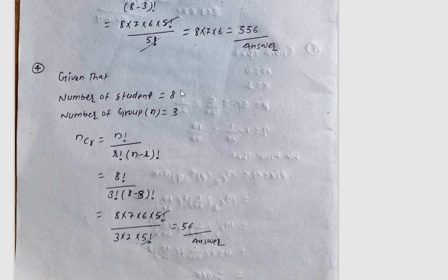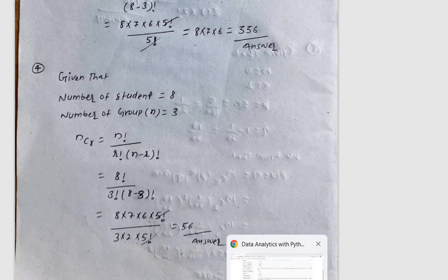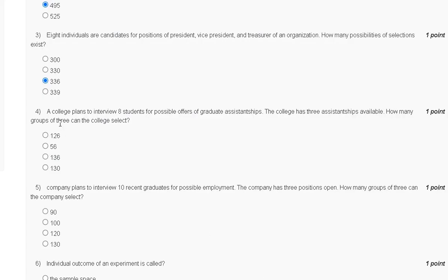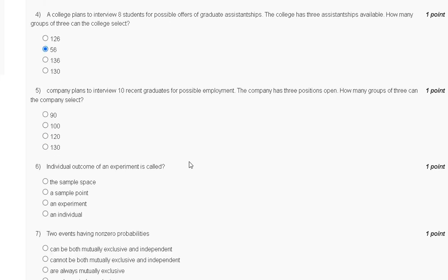The number of candidates equals 8, the group size is 3, and we use the combination formula: C(n,r) = n! / (r! × (n−r)!). Putting these values into the formula, we get 56. The correct answer to question four is option B.